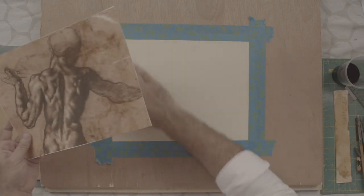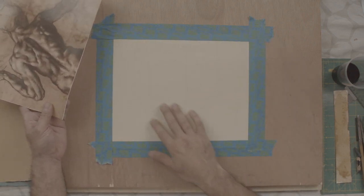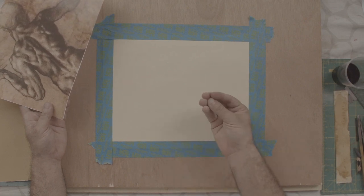This is a Canson-Mittientes charcoal paper or multimedia paper. It will need to have some capacity to hold moisture, otherwise the paper will fall apart.